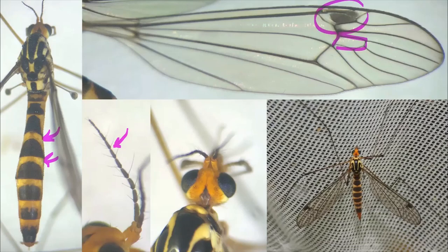To separate these two species, it is easiest to look at the top of the head. Nephrotoma flabellipalpis has only a tiny patch of black, with most of the head being yellow. However, N. crocata has most of the top of the head darkly pigmented. Looking at the top of the head here, this means that my specimen is Nephrotoma flabellipalpis.